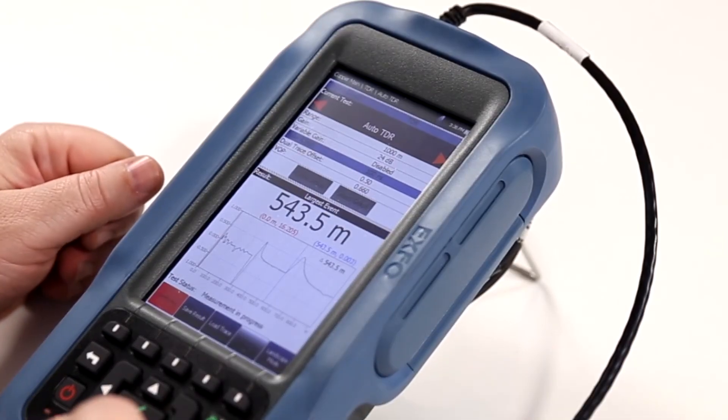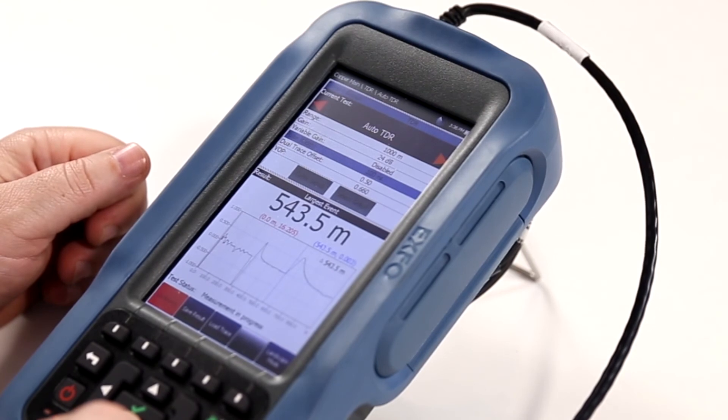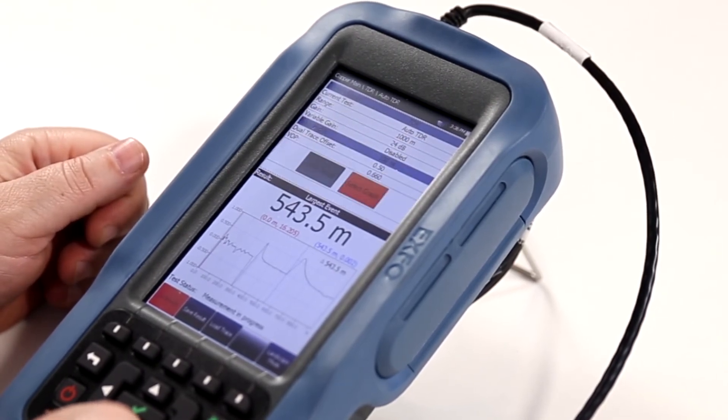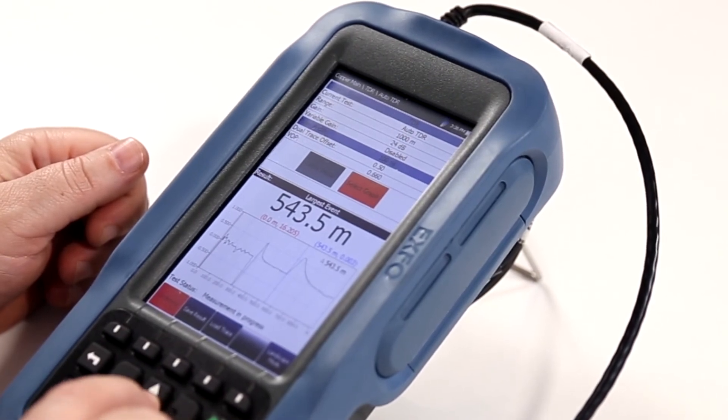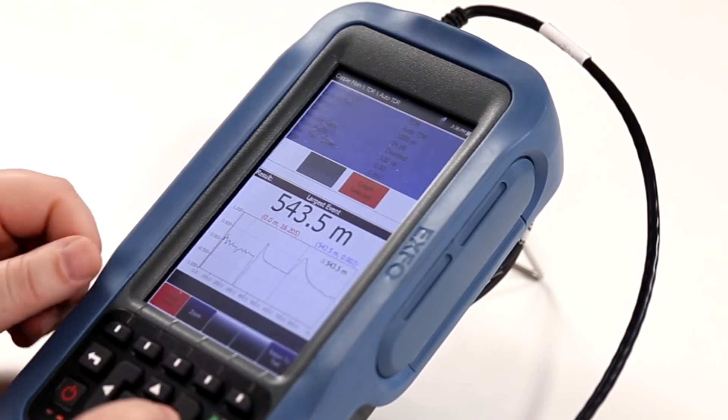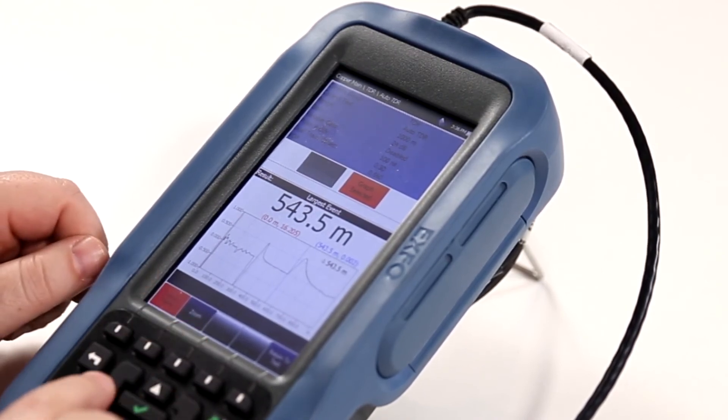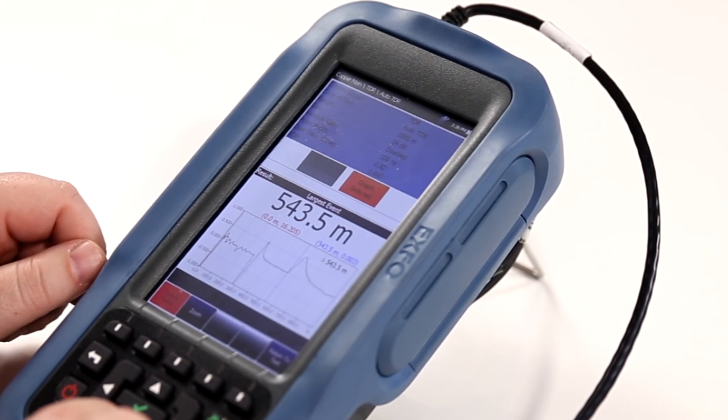In some situations, you may want to understand where these different faults are located. Even though the MACS tester may have shown you that you do have a fault, in this case at 543 meters, if we pick the select graph button, we would be able to move our cursor and a marker to properly highlight where events are. Right now, the cursor is the blue line at 543 meters.